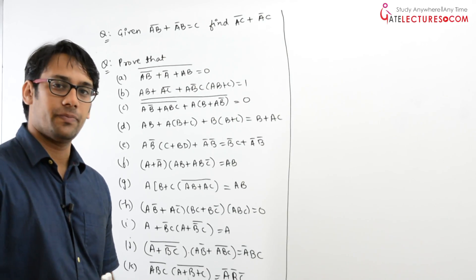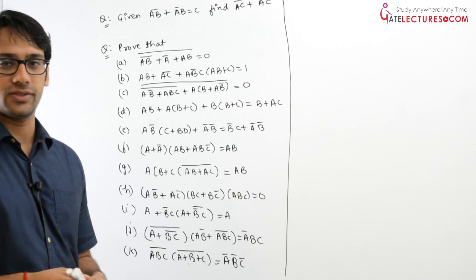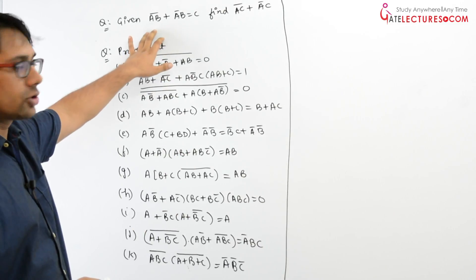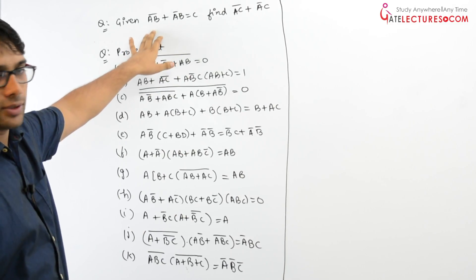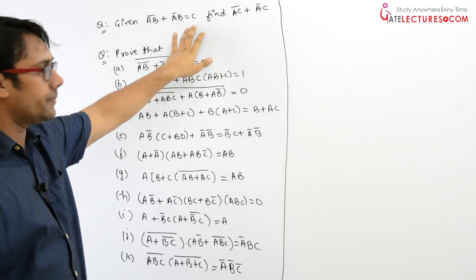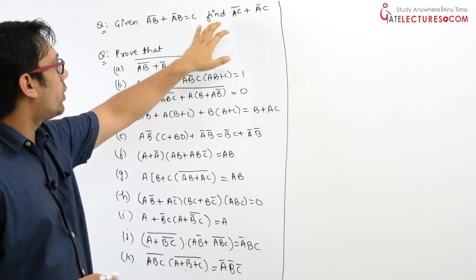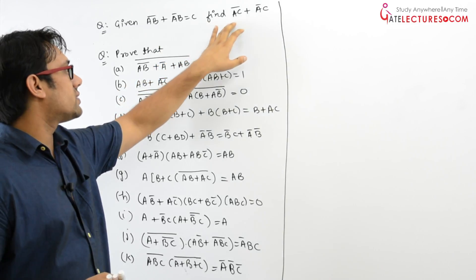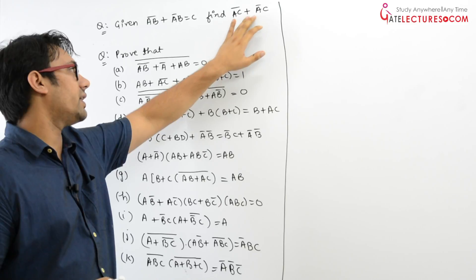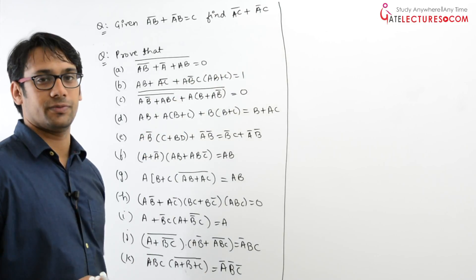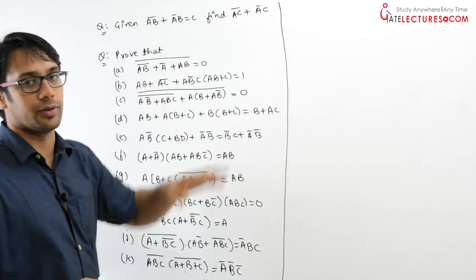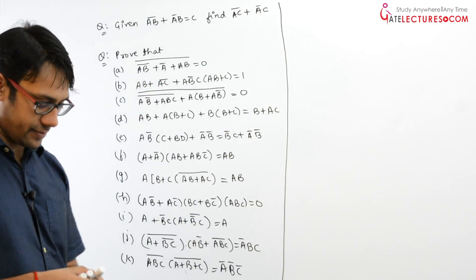Let us take this question. It says we have AB whole complement plus A complement B is equal to C. Now find what is AC whole complement plus A complement C. We need to find the value of AC whole complement plus A complement C.